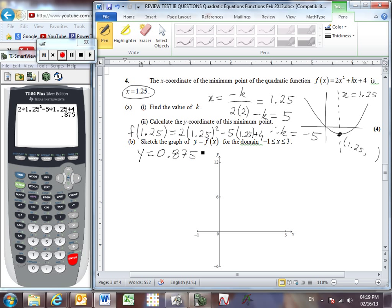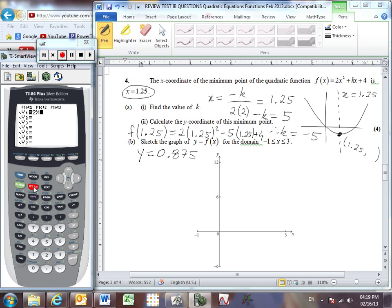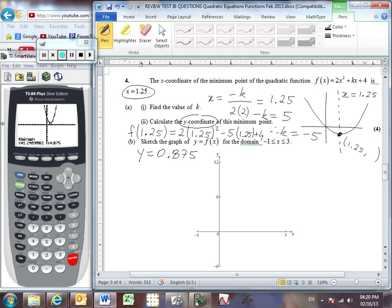And another way you could have done this problem is to go into y equals, and we enter our function, 2x squared, minus 5x, plus 4. We can graph it. And then we can use the minimum feature, second, trace, calculate. Go into option 3, minimum. The left bound, so the cursor's already on the left. That's great. That would be my left bound. I'll move the cursor to the right, and then hit enter as my right bound. And then lastly, I'll move the cursor real close to that point as my guess, and hit enter. And let's interpret this carefully. 1.2499982, that's just 1.25. It's a rounding error on the calculator. And we can see that the corresponding y value, which they're asking for in this question is just the y-coordinate, is going to be 0.875.